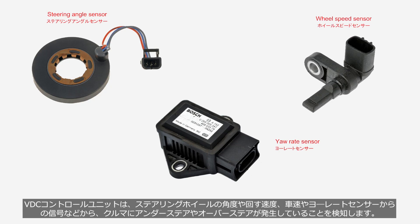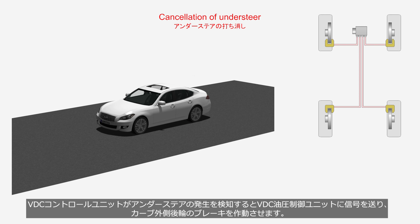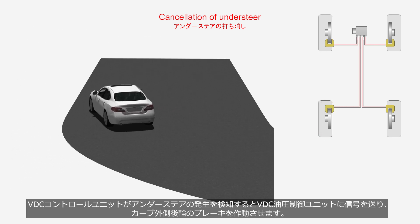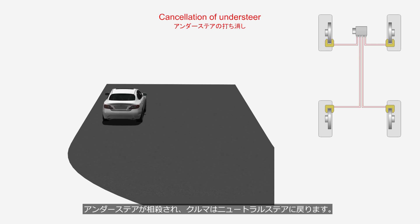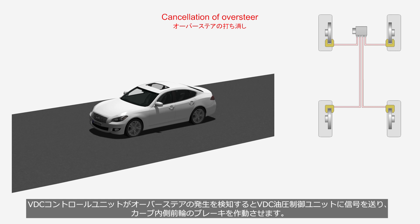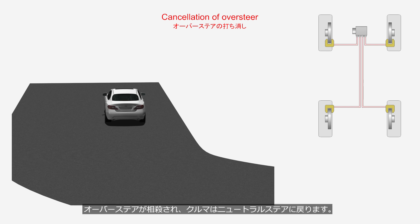The VDC control unit detects instances of understeer or oversteer by analyzing signals such as steering wheel angle and operation velocity, vehicle speed, and yaw rate sensor input. When the VDC control unit detects the occurrence of understeer, it sends a signal to the VDC hydraulic control unit, which activates the rear brake on the outside of the curve — understeer is canceled out and the vehicle returns to neutral steer. When oversteer is detected, it activates the front brake on the inside of the curve — oversteer is canceled out and the vehicle returns to neutral steer.